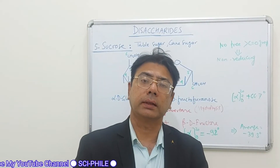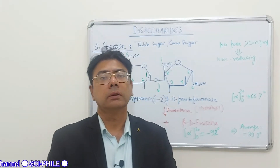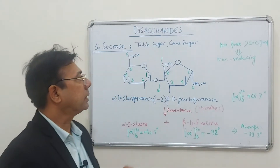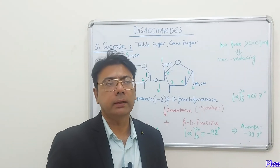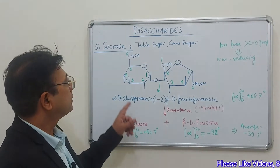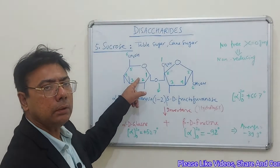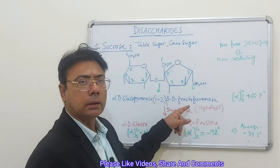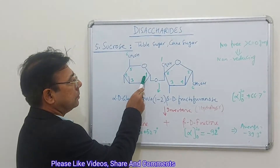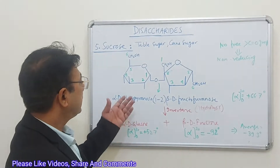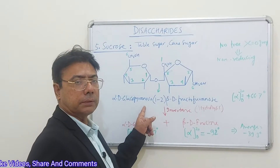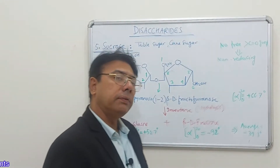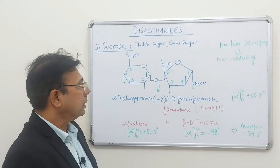The next very important disaccharide is sucrose, one of the most abundant nutrients — the common table sugar, also called cane sugar, present most abundantly in various plant sources. Sucrose is made up of one alpha-D-glucose molecule and one beta-D-fructose molecule, linked through a 1,2 glycosidic linkage — position one of glucose is bonded to position two of fructose. Glucose is in pyranose conformation while fructose is in furanose configuration, so it can be named alpha-D-glucopyranose 1→2 beta-D-fructofuranose.